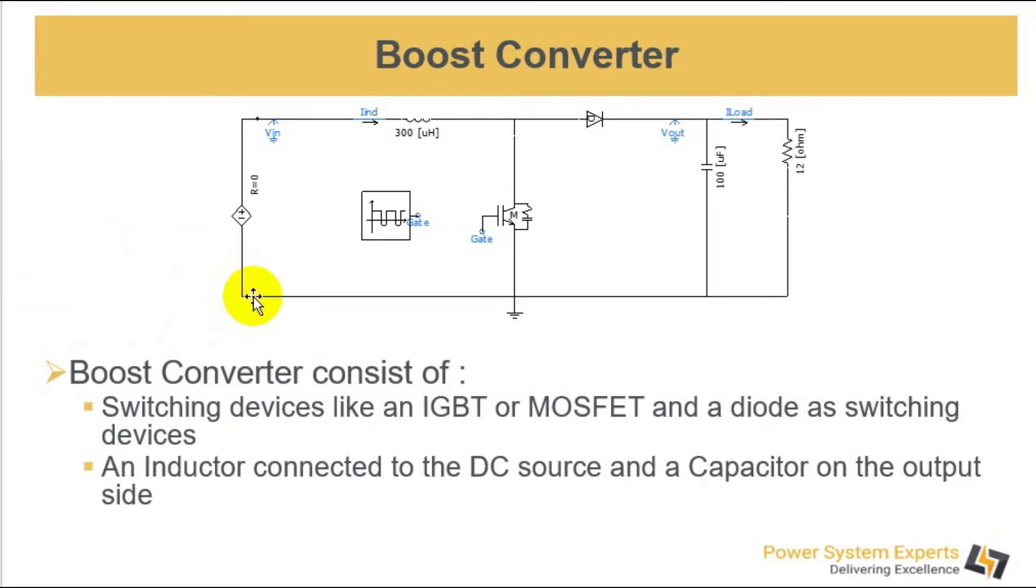Here you see a basic circuit of Boost Converter. It consists of an inductor in series with the source and a MOSFET or an IGBT which is connected on the other side of the inductor and ground. The drain or collector of the MOSFET or IGBT is connected to the inductor and its emitter or source is connected to the ground. There is a diode in forward direction and a capacitor on the output side.